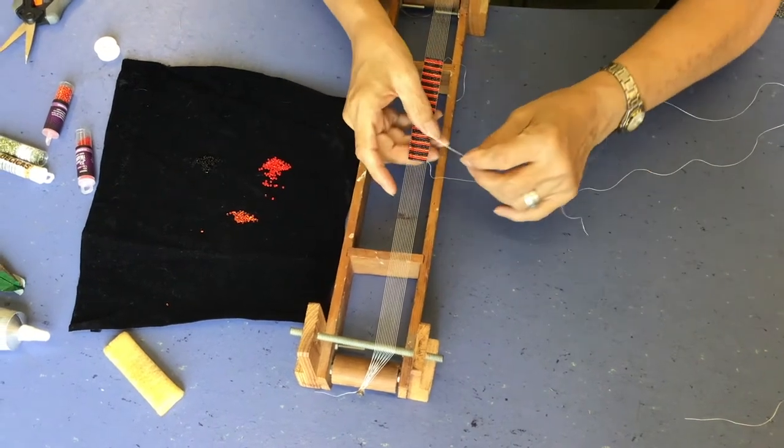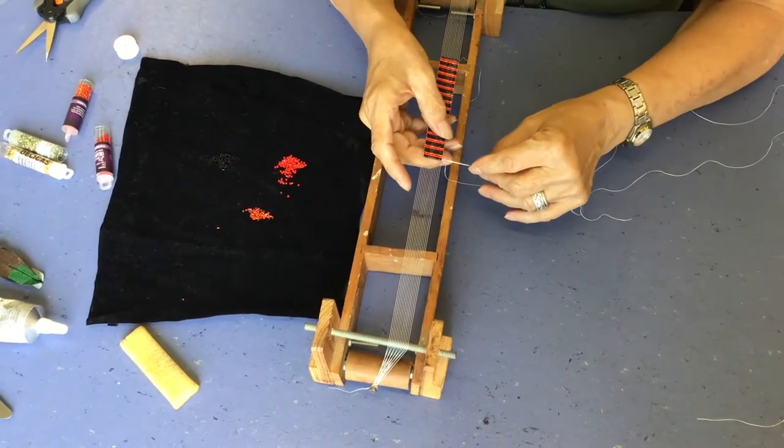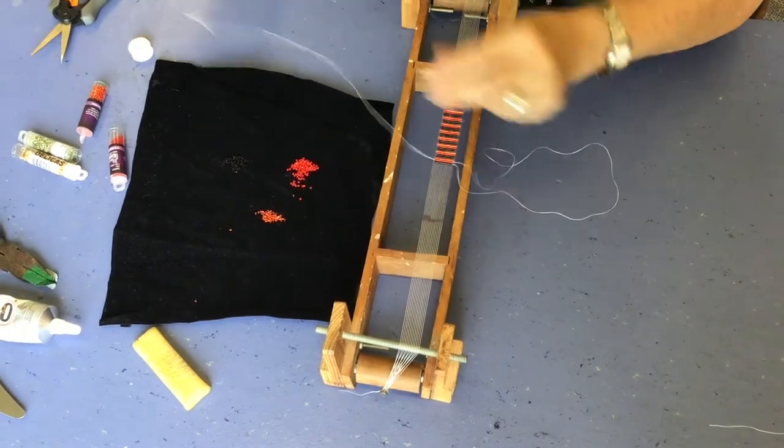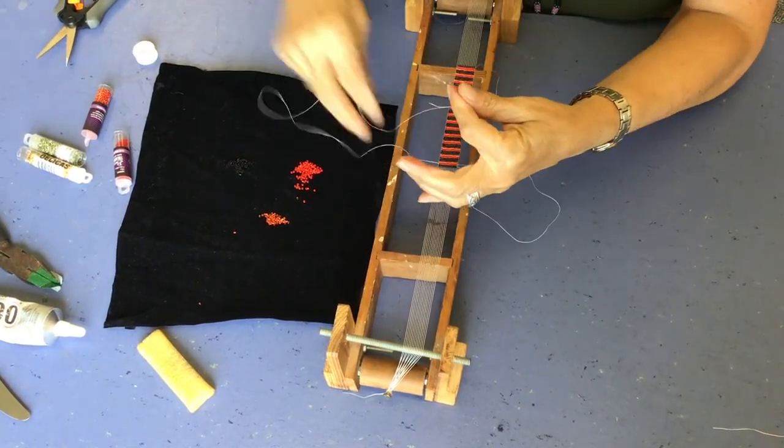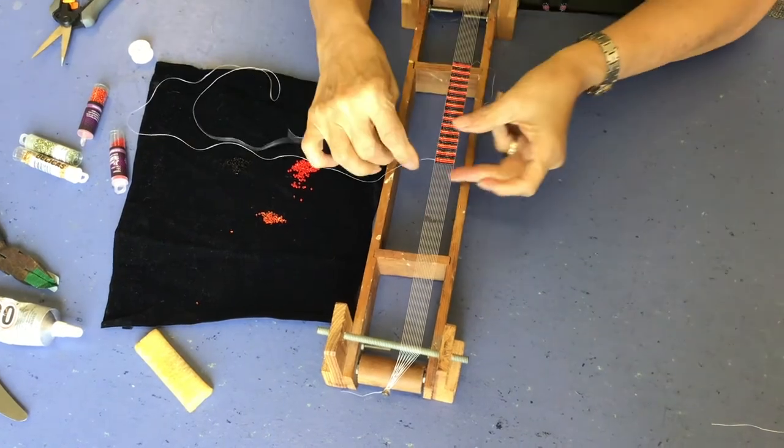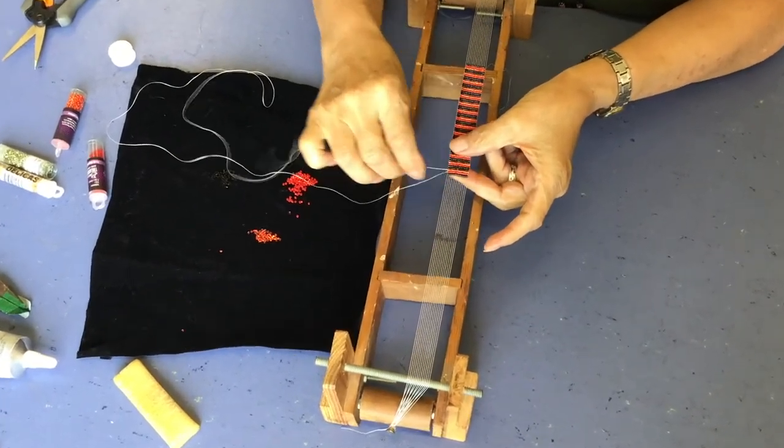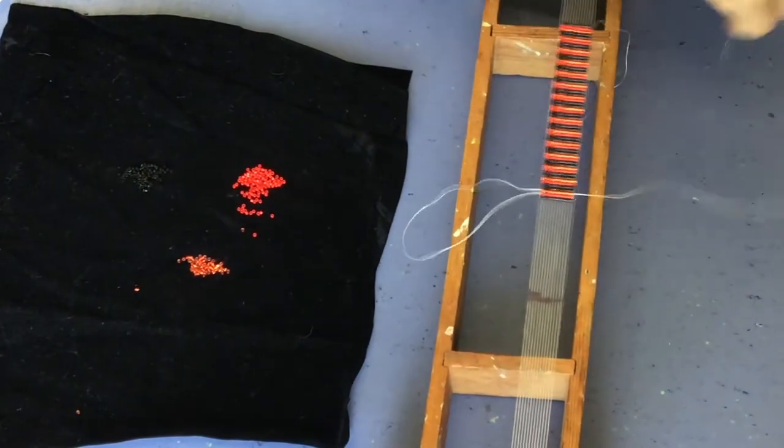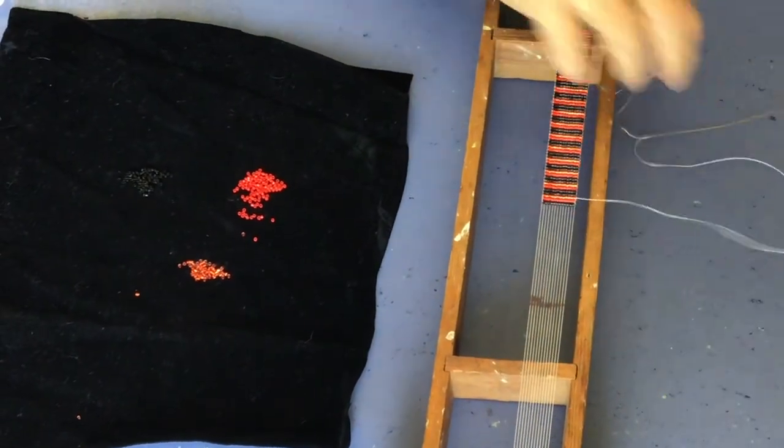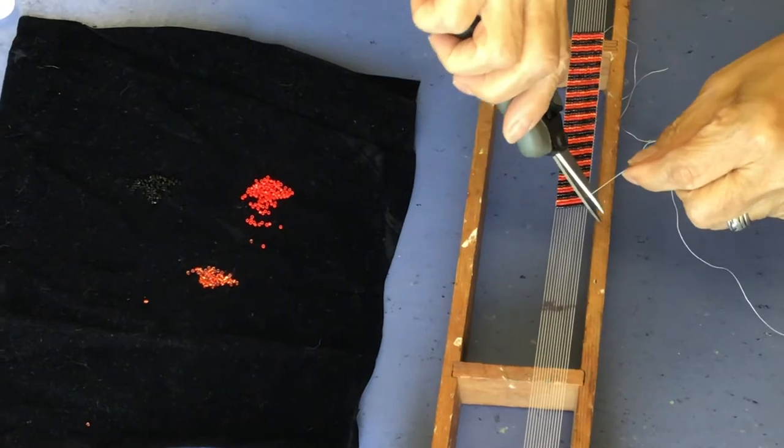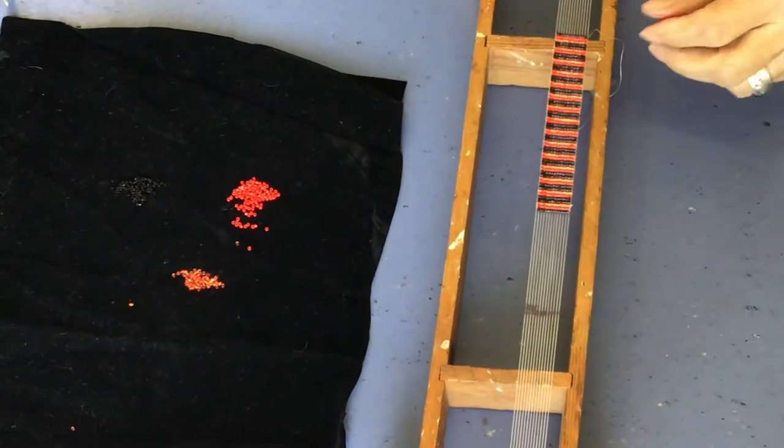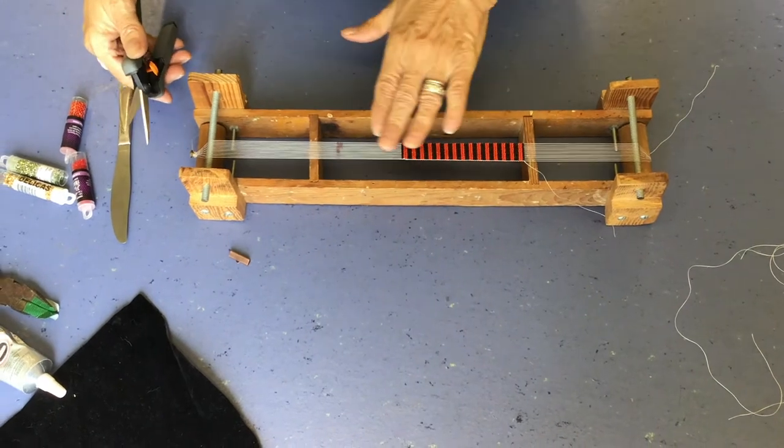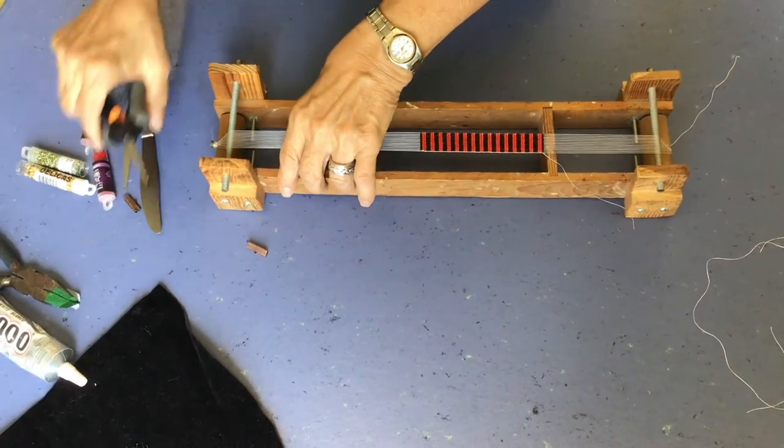All right. We have our bracelet as long as we want it. What we're going to do is the same thing you did when you added a thread. Go through the row below. And the one below that. And then you're just going to cut that off as close as you can on that side. That's just weaving them in. And that's the end. The beadwork is as long as we want it to be. And so what we're going to do is cut it off of the loom at this point.